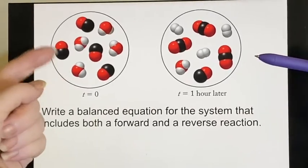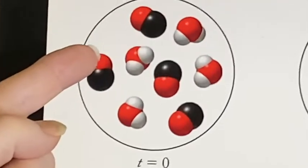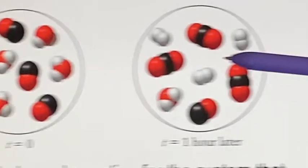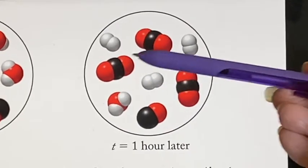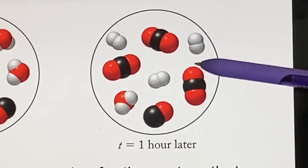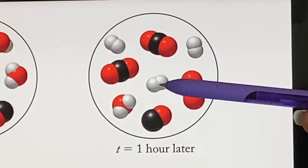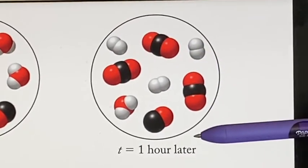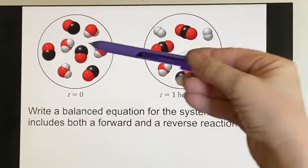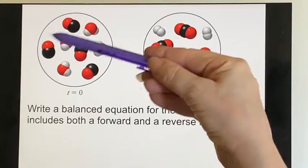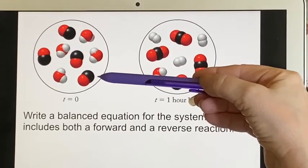In this first one that they've marked at time equals zero, I see some carbon monoxide and I see water on this side. Well, here's some carbon dioxide and here's some water, but I also have a bunch of carbon dioxide and some diatomic hydrogen. So when I go to write it, I'm going to be using the carbon dioxide and water on this side, on the left side.